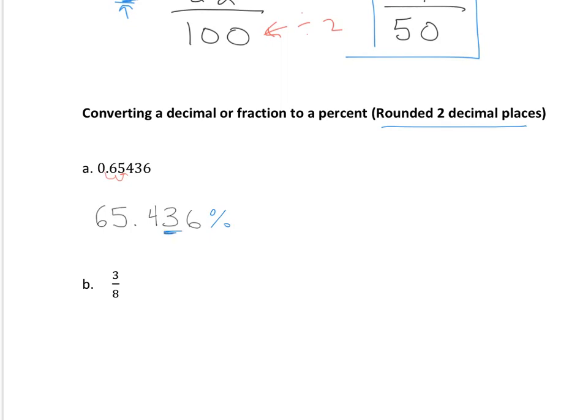Is the number to the right of it five or higher? It sure is. So when we do round this, what we're going to do is we're going to make that three into a four because, again, this number is five or higher. So it's going to be 65.44 is going to be our final answer for that one.